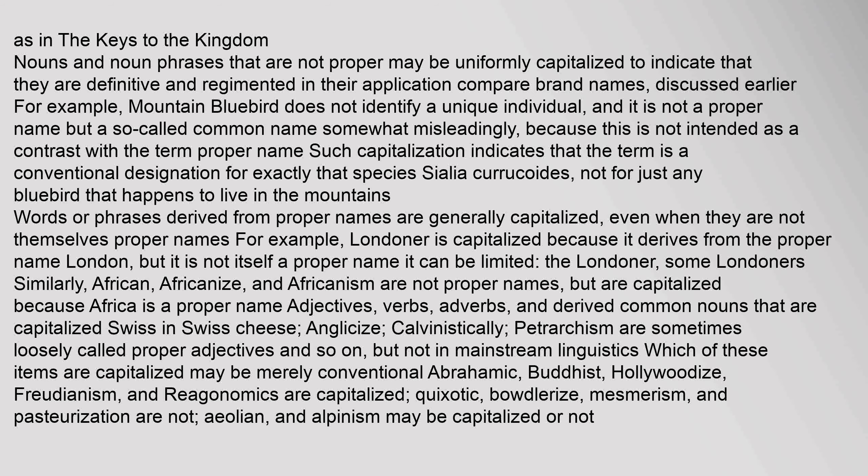Words or phrases derived from proper names are generally capitalized even when they are not themselves proper names. For example, Londoner is capitalized because it derives from the proper name London, but it is not itself a proper name — it can be pluralized: the Londoner, some Londoners. Similarly, African, Africanize, and Africanism are not proper names but are capitalized because Africa is a proper name. Adjectives, verbs, adverbs, and derived common nouns that are capitalized — Swiss in Swiss cheese, Anglicize, Calvinistically, Petrarchism — are sometimes loosely called proper adjectives, but not in mainstream linguistics. Which of these items are capitalized may be merely conventional: Abrahamic, Buddhist, Hollywoodize, Freudianism, and Reaganomics are capitalized, while Quixotic, Bowdlerize, Mesmerism, and Pasteurization are not.